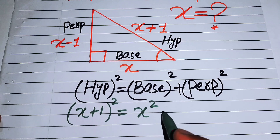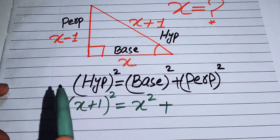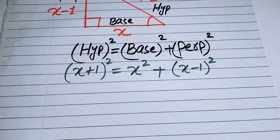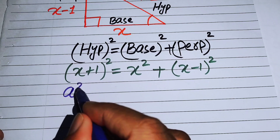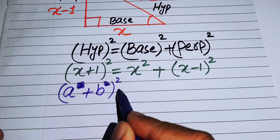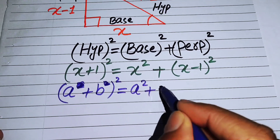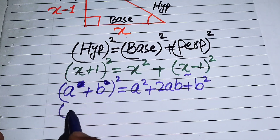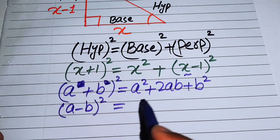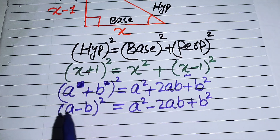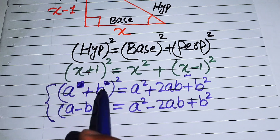The base is X, giving X², and the perpendicular is X minus 1, giving (X − 1)². To expand these, we use the algebraic identities: (a + b)² = a² + 2ab + b², and (a − b)² = a² − 2ab + b².